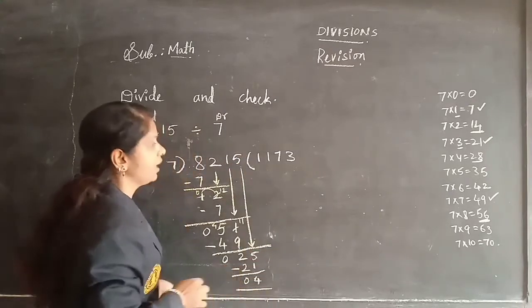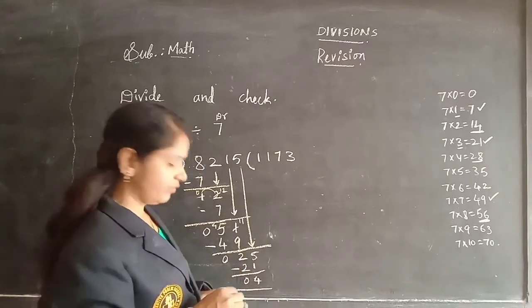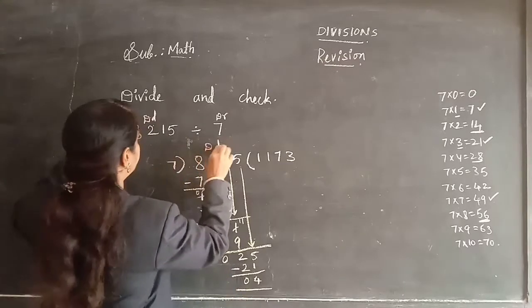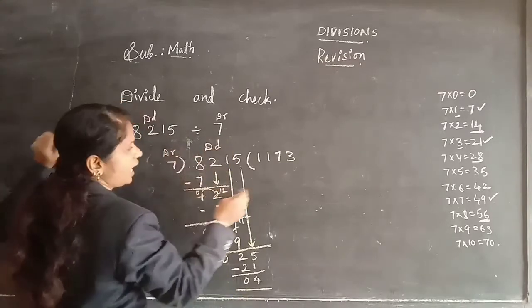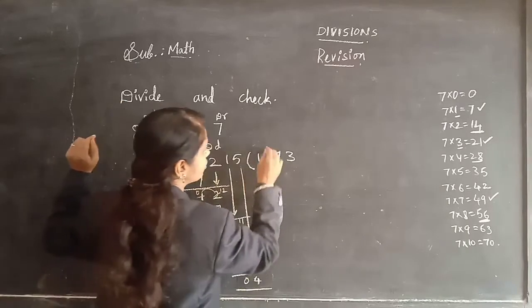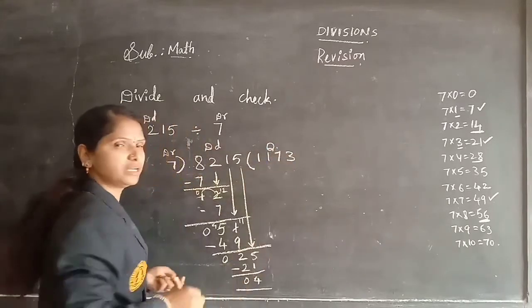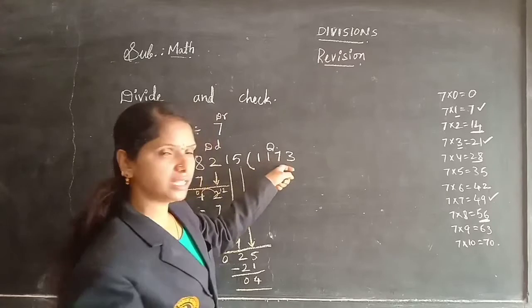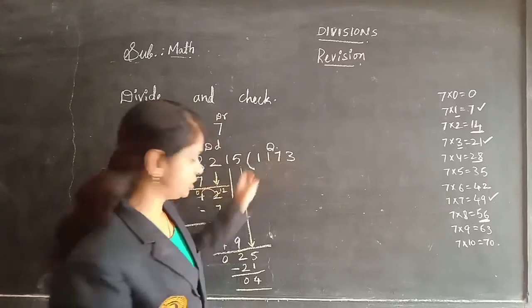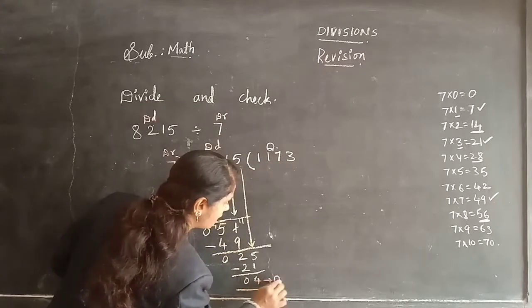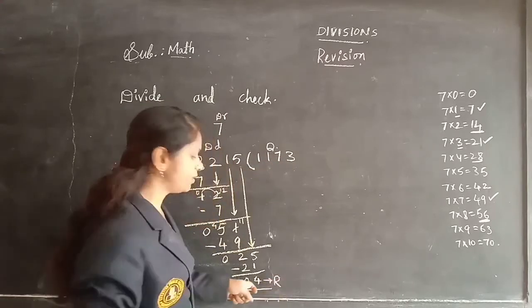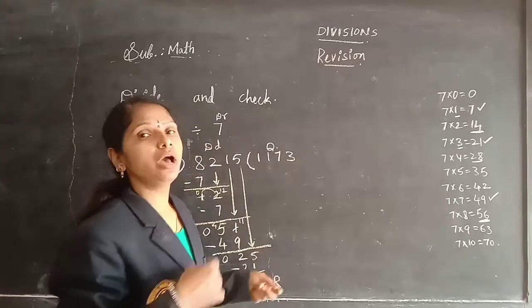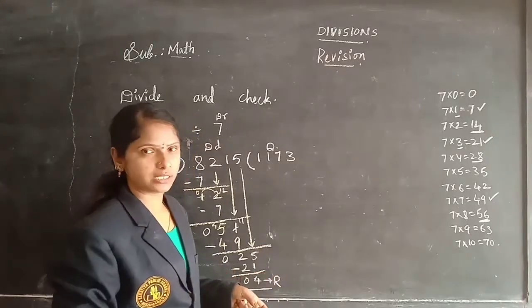Now the quotient is 1,173 — the answer of the division. And the remainder is 4 — the leftover number after division.